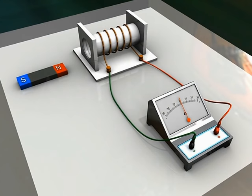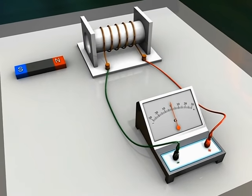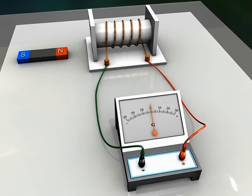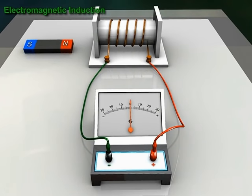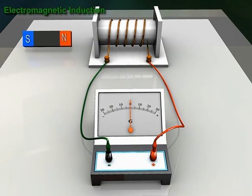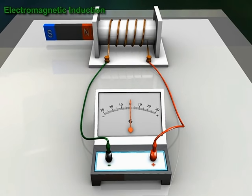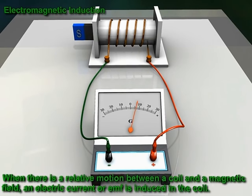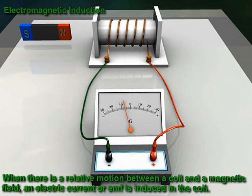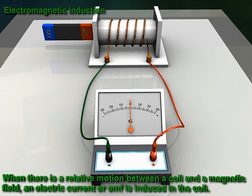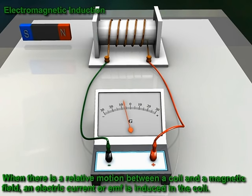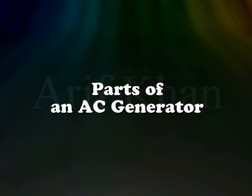An AC generator works on the principle of electromagnetic induction. In electromagnetic induction, when there is a relative motion between a coil and a magnetic field, an electric current or EMF is induced in the coil.